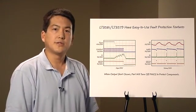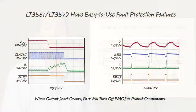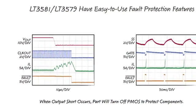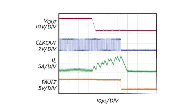As these scope shots show, the fault protection in the previous circuit protects against output shorts. In the scope shot on the left, a short is applied at this point. The inductor current builds up as a result and is detected by the chip.